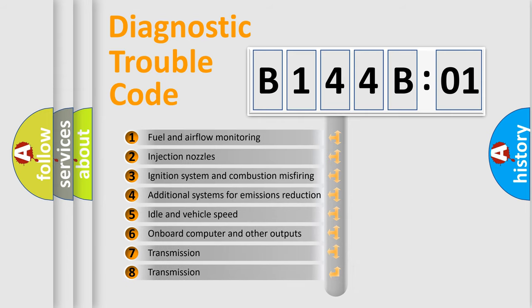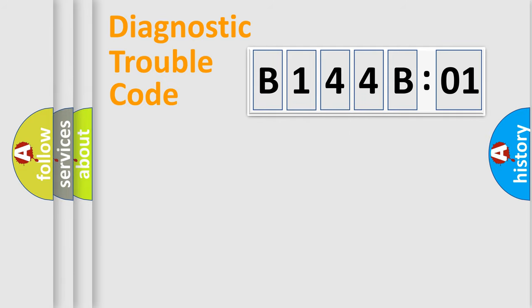The third character specifies a subset of errors. The distribution shown is valid only for the standardized DTC code. Only the last two characters define the specific fault of the group.